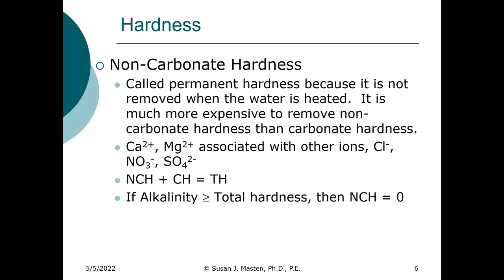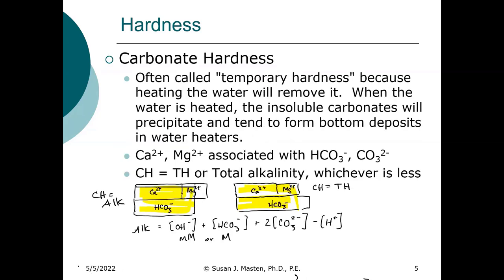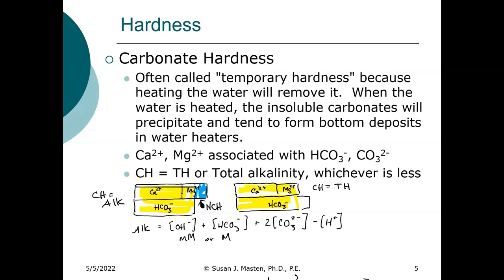Looking at the bar graph examples: in the first example, the blue portion represents the non-carbonate hardness. For the second example, where the alkalinity exceeds the total hardness, the non-carbonate hardness equals zero. This concept is extremely important because it governs everything we do in terms of hardness removal.